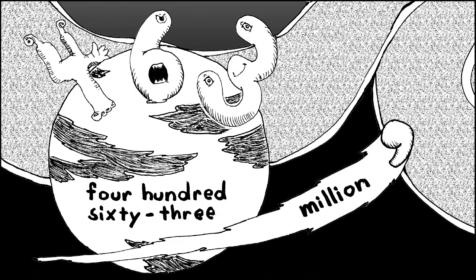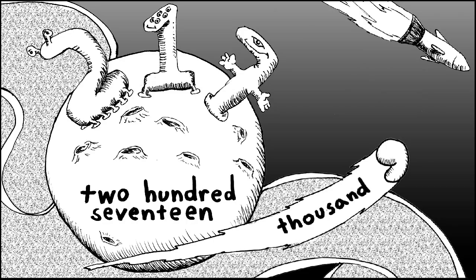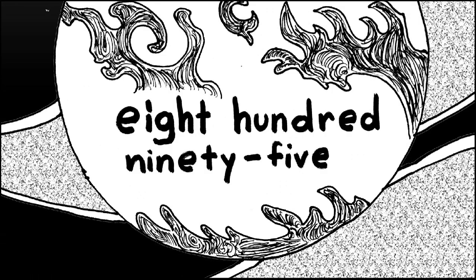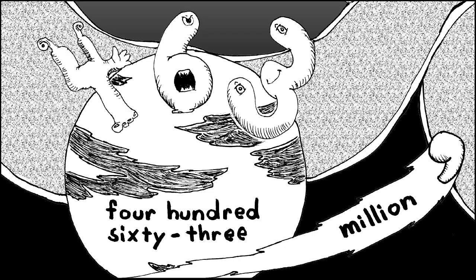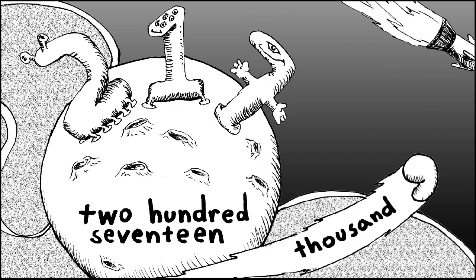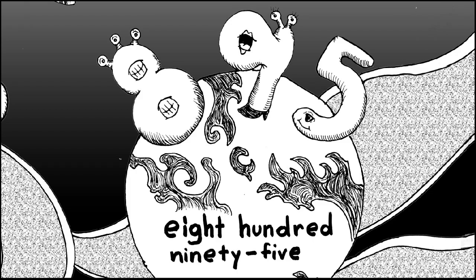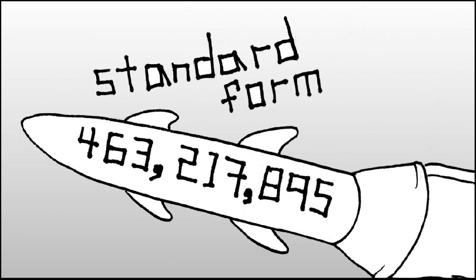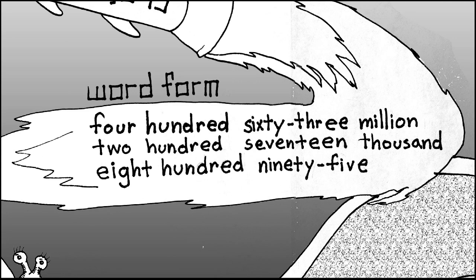So far we have four hundred sixty-three million, two hundred seventeen thousand. Then we come to our last planet, where we have an eight, nine, and five. If you said eight hundred ninety-five, you are correct. There are no more commas, so we just say eight hundred ninety-five and that's it. When we travel by all of our planets and say all the commas flying between them, we have four hundred sixty-three million, two hundred seventeen thousand, eight hundred ninety-five. The number in digits is called standard form, and the complete word form is four hundred sixty-three million, two hundred seventeen thousand, eight hundred ninety-five.